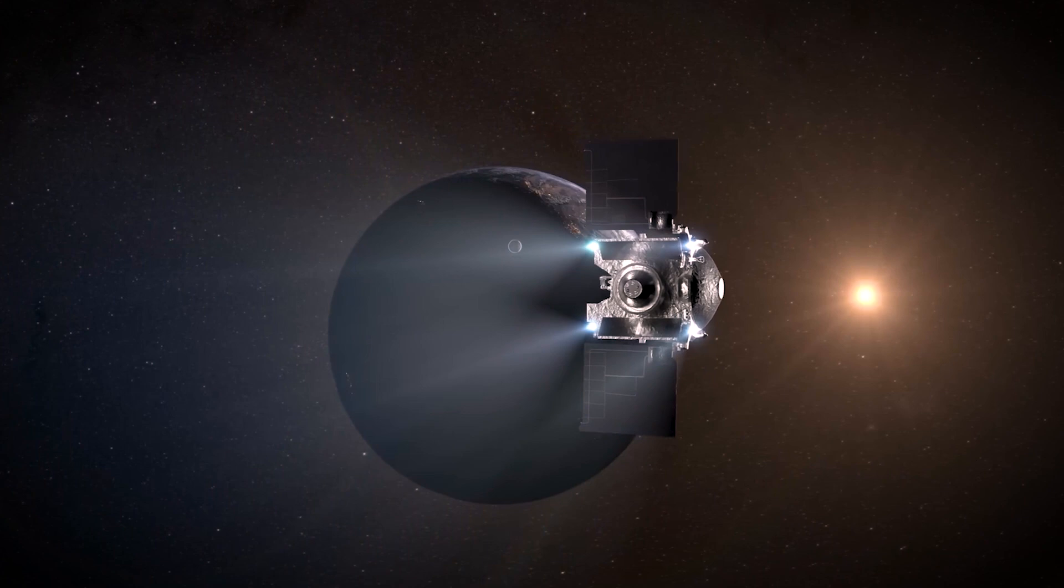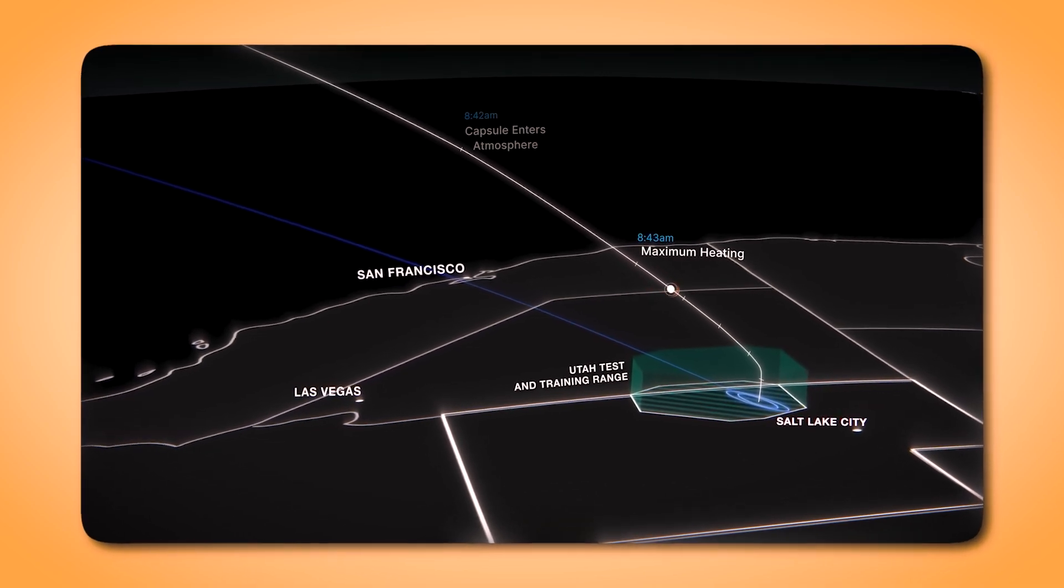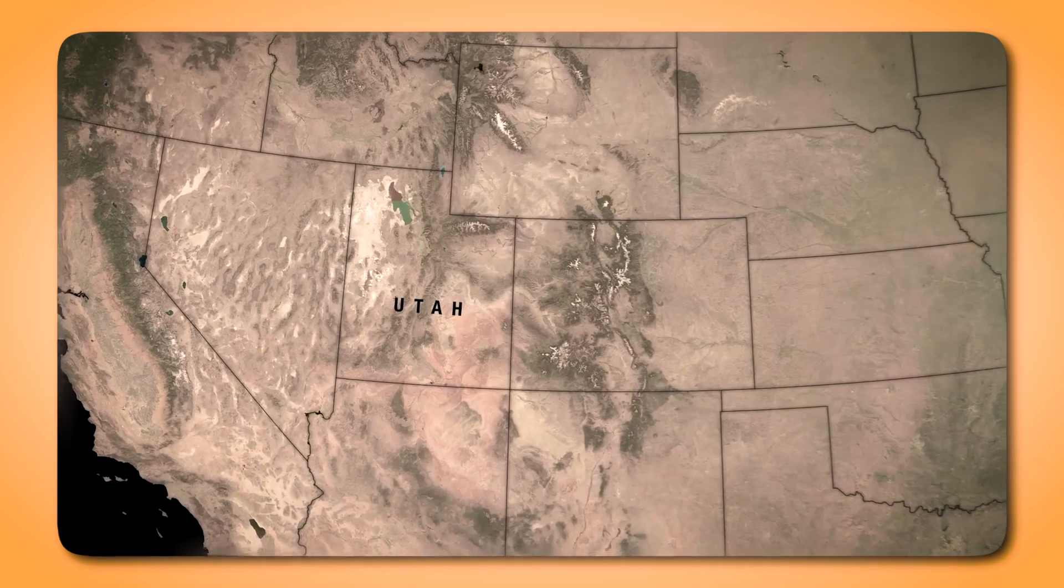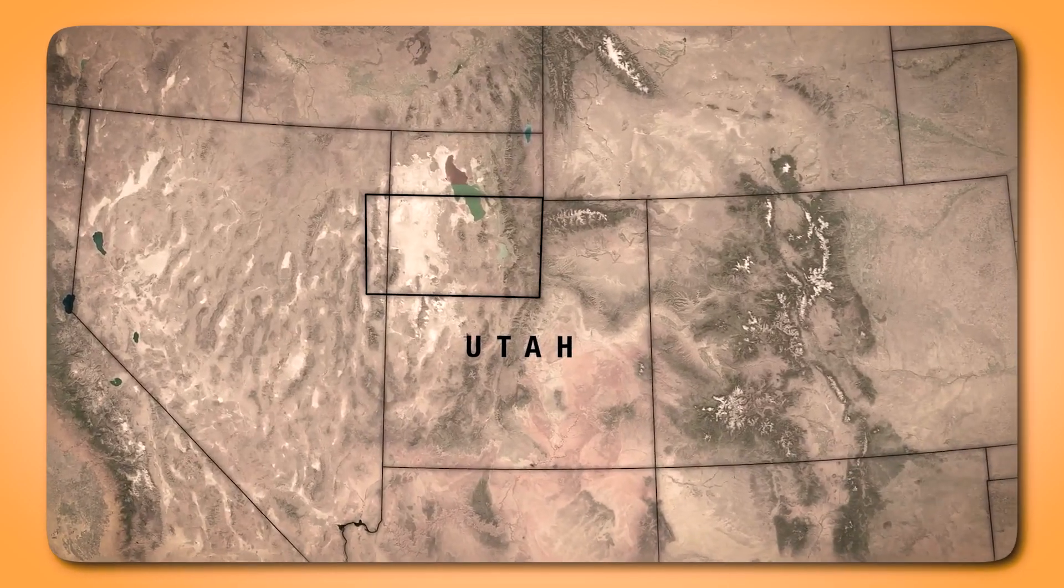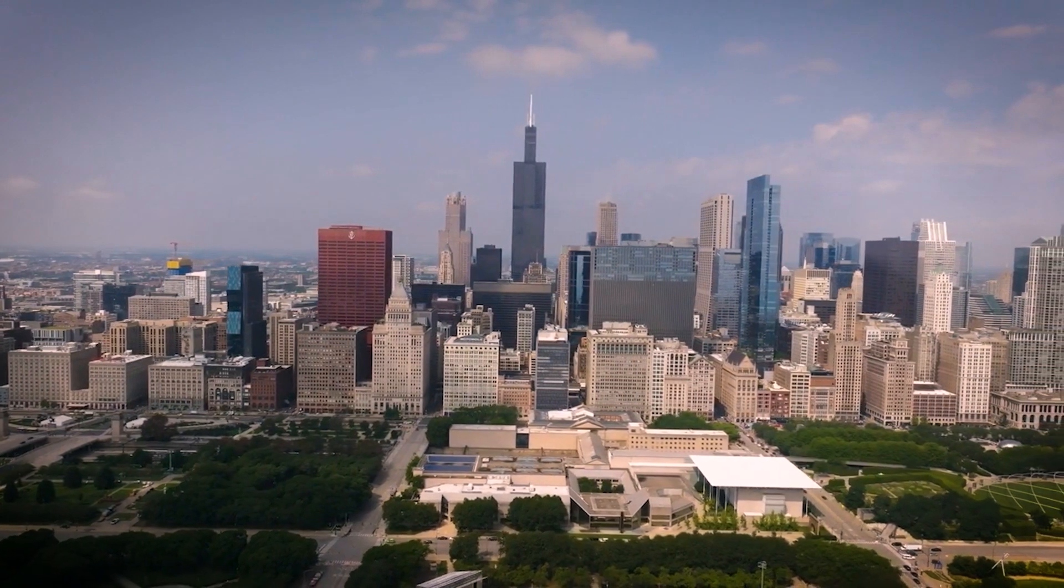The spacecraft then fired its thrusters to avoid Earth, setting off on a new mission we'll discuss later. This release had to be perfectly timed and precisely angled to ensure the capsule hit its target, a 600 square kilometer area in Utah's desert. To put that into perspective, it's roughly the size of Chicago, or the Isle of Man.